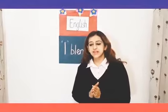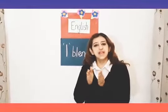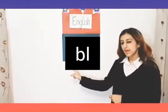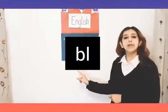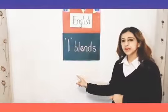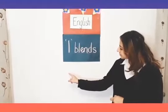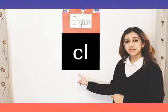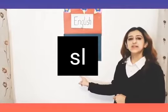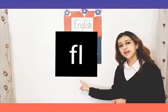When two consonants are at the beginning of a word, their sounds are blended. For example, look here: B and L — blend. P and L — blend. C and L — blend. SL and L — slur. FL and L — blend. So these are blends.